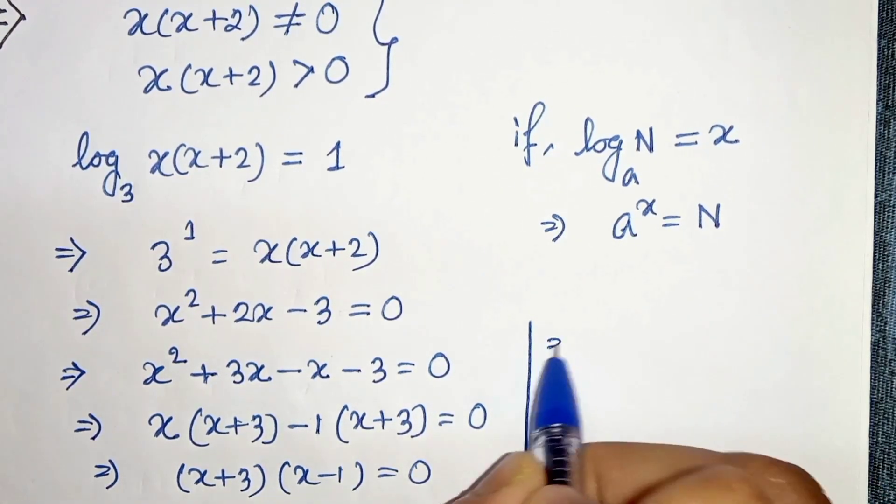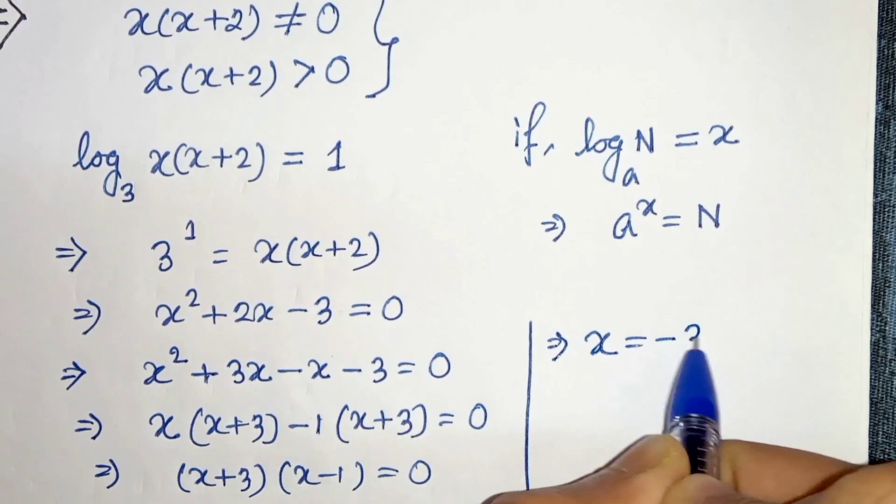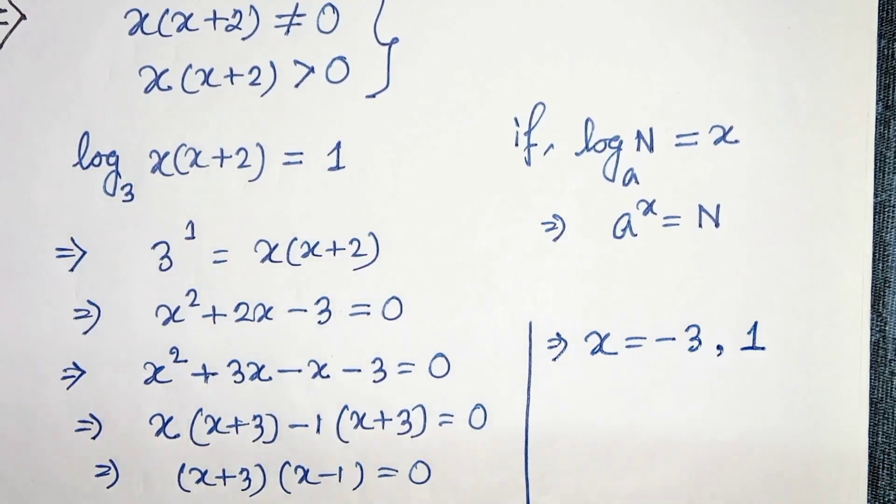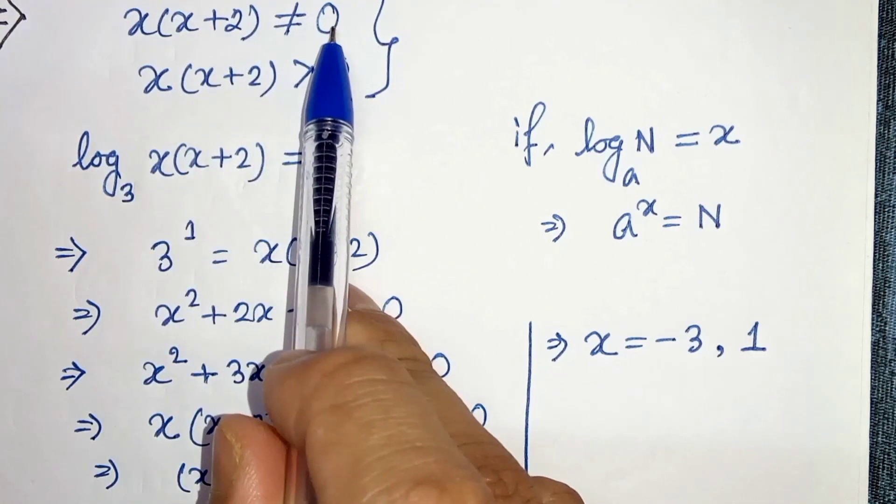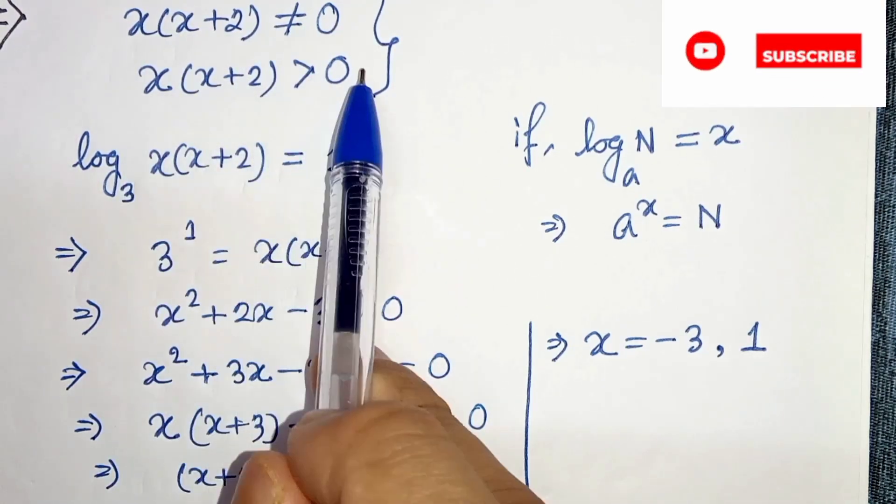So now we have two solutions for x: x equals minus 3 and 1. But our equation is valid only when this part not equals to 0 or this part is greater than 0.